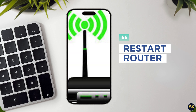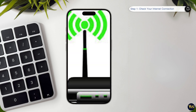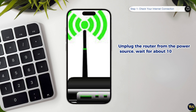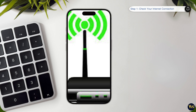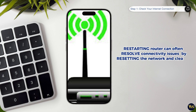Number 3: Restart router. If you are on Wi-Fi and still experiencing unstable connectivity, it may help to restart your router. Unplug the router from the power source, wait for about 10 seconds to let it fully power down, and then plug it back in. Allow the router a few minutes to reboot and reconnect. Restarting your router can often resolve connectivity issues by resetting the network and clearing any temporary glitches that may be affecting your internet connection.